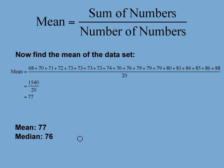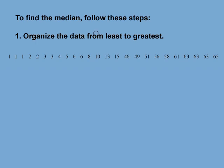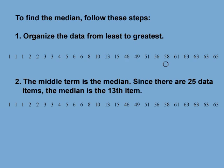The median and the mean are often close together, but not always. Let's look at a final example. At a family gathering, the ages of the attendees are captured in the table. Compare the median and the mean age. Looking at the data, you can see the ages vary from one-year-olds to people in their 60s. Let's start by finding the median. First, organize the data in order from left to right. Here you see all the ages arranged from least to greatest. The next step is to find the middle term — the middle term is the median. Since there are 25 data items, the median is the 13th term.